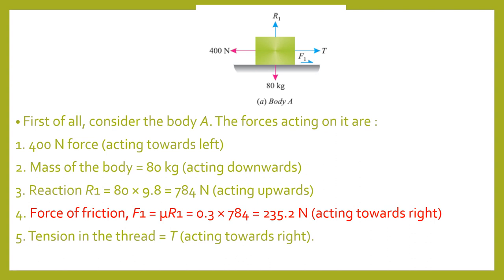Next is the frictional force, which acts in the opposite direction to motion. Since the body is moving towards the left, frictional force acts towards the right. The formula for frictional force is coefficient of friction into normal reaction, that is mu × R1 = 0.3 × 784 = 235.2 N, acting towards the right.